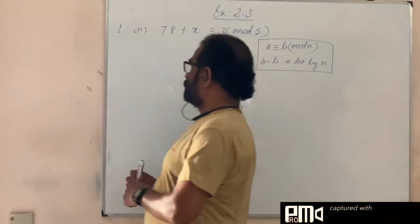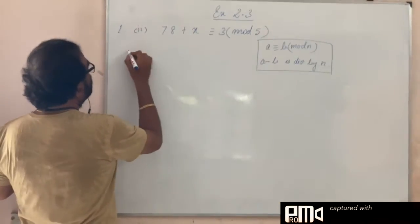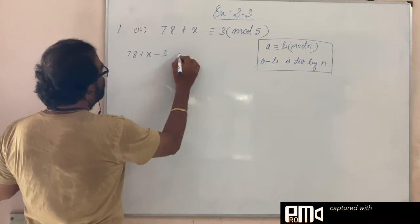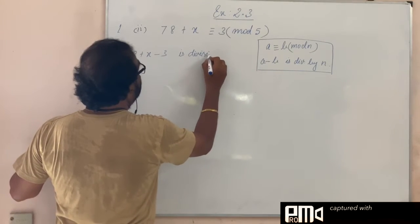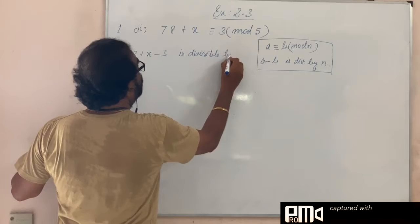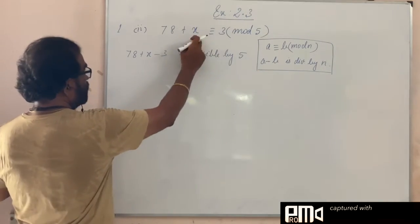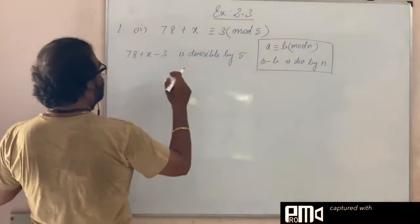We apply here. Now 78 + x is congruent to 3 mod 5, means 78 + x - 3 is divisible by 5. After the subtraction of the remainder, it is divisible by that 5.